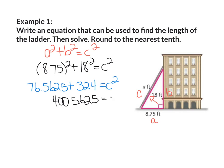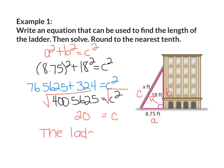Now I'm going to take the square root of both sides. The square root of c squared is just c. The square root of 400.5625 is 20. So the ladder is 20 feet.